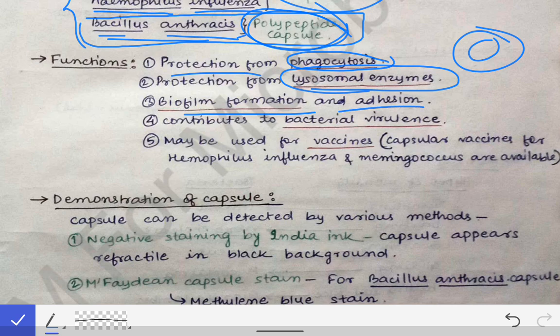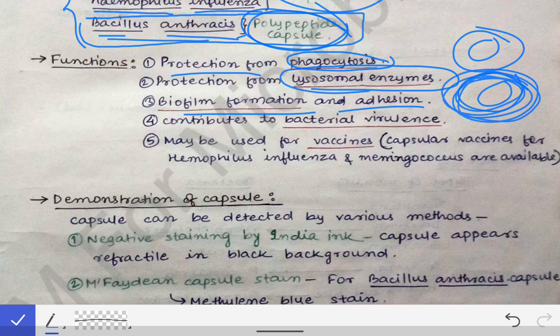The capsule also helps in biofilm formation and adhesion. Biofilm means the glycocalyx or capsule surrounding the bacteria forms a very sticky layer, allowing it to attach to any surface. Once a biofilm is formed, no substance is easily going to kill the bacteria, so in this way it helps in biofilm formation.